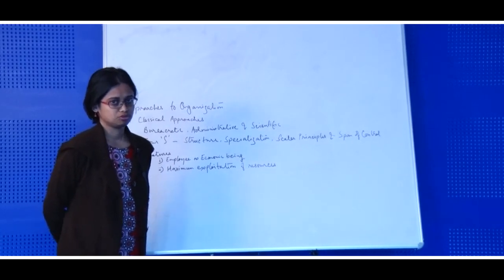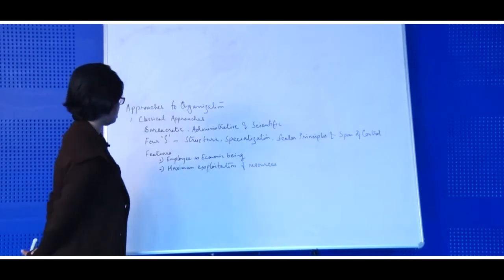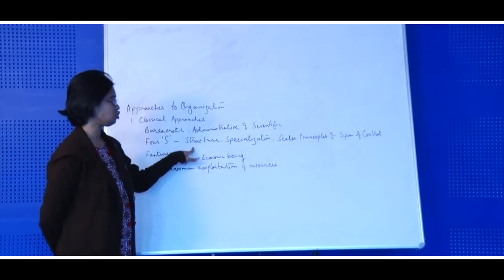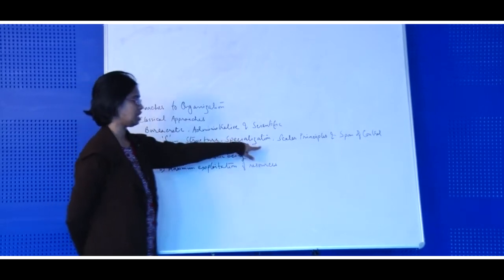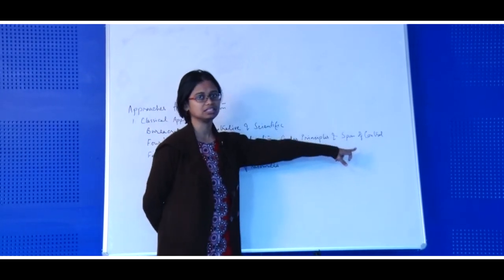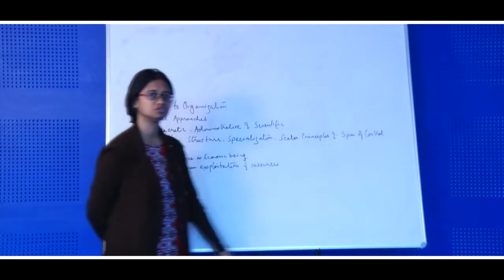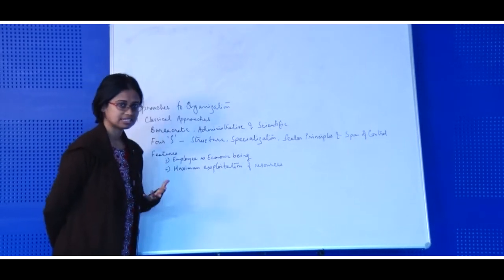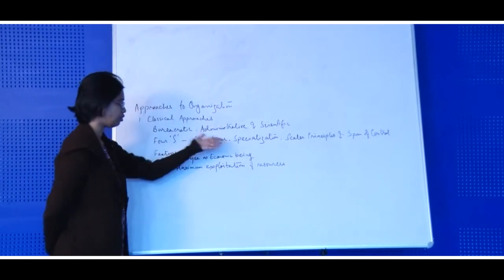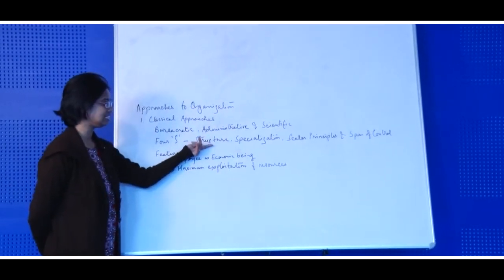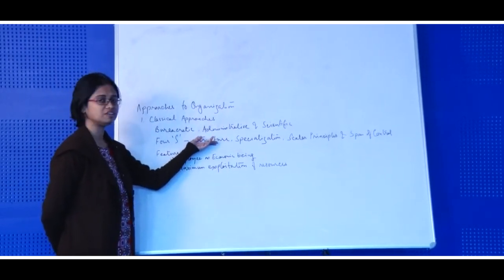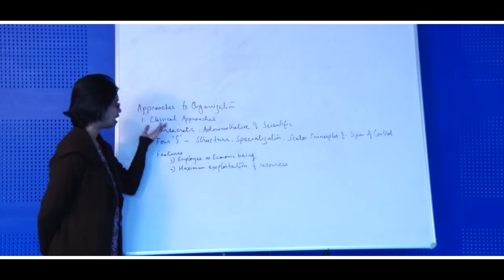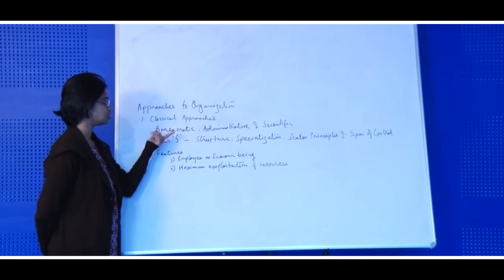Another important part is the four S's of classical approaches to the modern organization: structure, specialization, scalar principles, and span of control. These are the main features and the main domain of classical approaches.